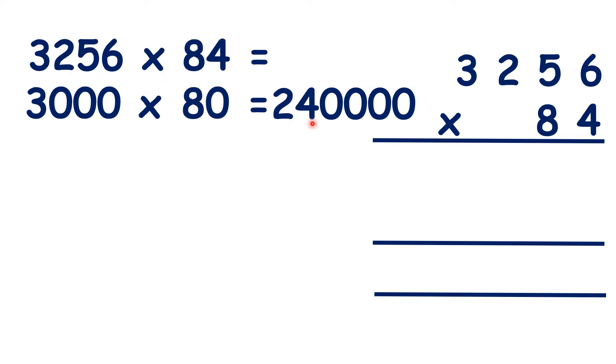So now, let's find our answer. 6 times 4 is 24, 5 times 4 is 20, plus 2 is 22, 2 times 4 is 8, plus 2 is 10, and 3 times 4 is 12, plus 1 is 13.